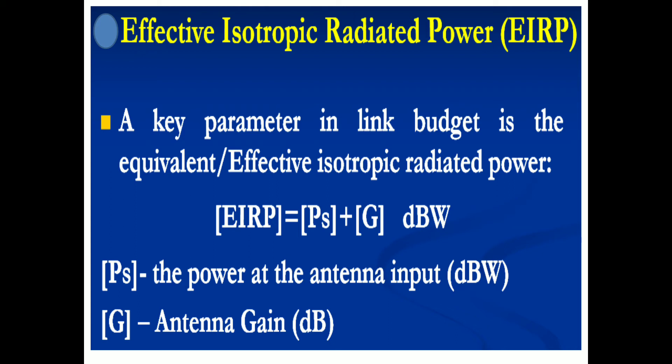In this video I'll be covering link budgeting — that is, calculating the signal-to-noise ratio for a given link, both uplink and downlink, when the parameters are specified. The first parameter we need to identify and calculate is EIRP, which is Effective Isotropic Radiated Power — the product of transmitted power and the gain of the transmitting antenna. In dBs, EIRP equals the power at the input of the antenna P plus the gain of the antenna.